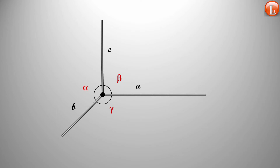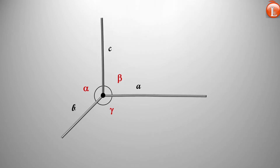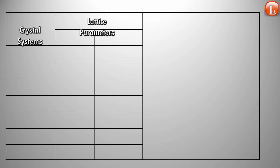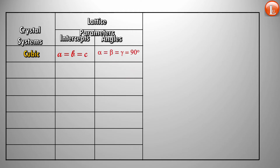Now let us understand each of these shapes based on these crystal parameters — we have a table here. The first is cubic shape. As we all know, in a cubic shape all three sides are equal: A, B, and C are equal to each other, and all angles alpha, beta, and gamma are equal to 90 degrees.